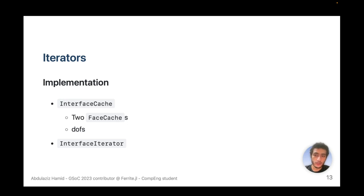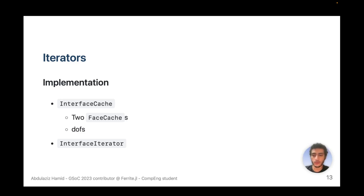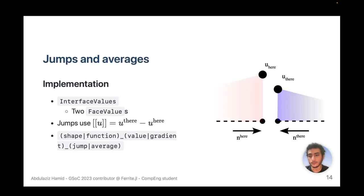For iterators, we have an interface cache which is two face caches, and we have the degrees of freedom of both cells of the interface which is used for assembly. The interface iterator works very similarly to a face iterator — it iterates over all the interfaces of the grid exactly once, without iterating once on each side separately.